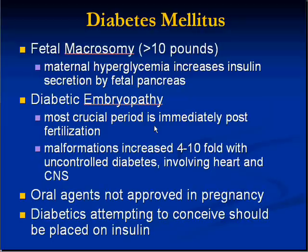The most crucial period is immediately post-fertilization, and the two systems which are immediately most sensitive for anomalous development are the cardiovascular and central nervous system. Uncontrolled diabetic mothers have about a four- to tenfold increased chance of having babies with heart or central nervous system defects, and the critical period for these systems is almost right after fertilization. Oral diabetic agents are generally thought of as being teratogenic, so it's very likely that a mother on them will switch to insulin during pregnancy.